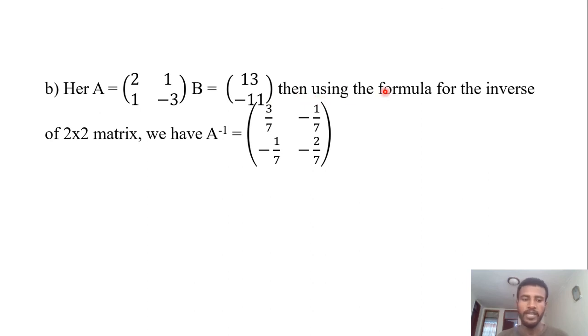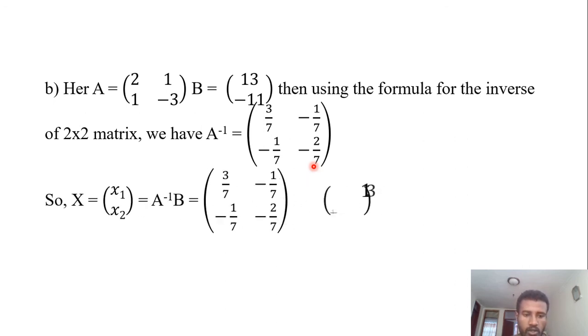A inverse is equal to [3/7, -1/7; -1/7, -2/7]. This is the inverse formula.